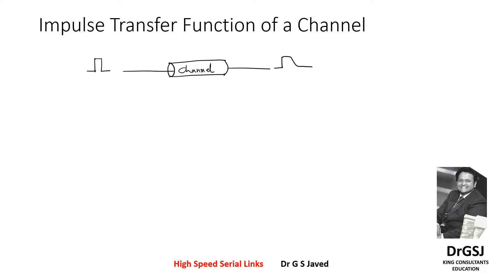When you transmit an impulse, what does an impulse mean? An impulse is a pulse having a finite time constant Ts, or on-time, having an amplitude A0.